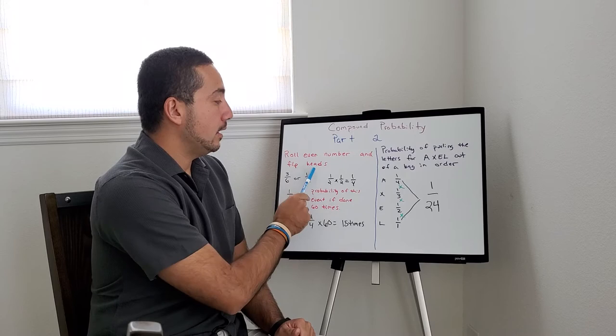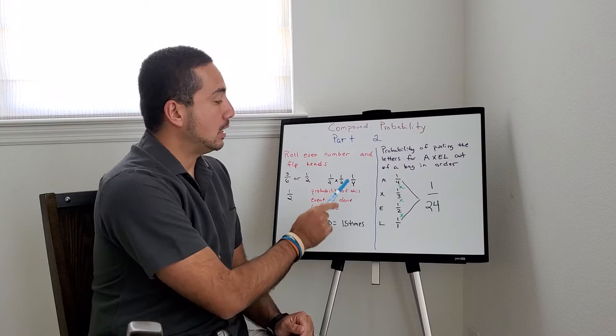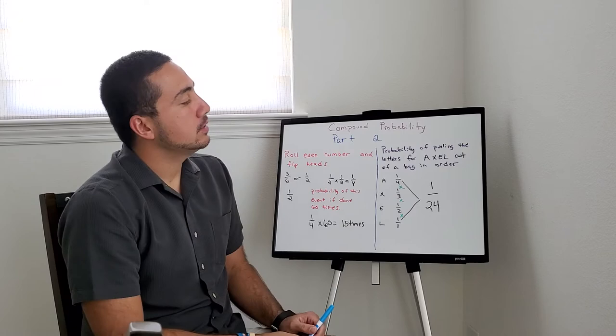But now let's say what's the probability of this event if this is done 60 times. What do you do? You multiply the probability times 60 times. 1/4 times 60, 15 times is the probability that this event will happen.